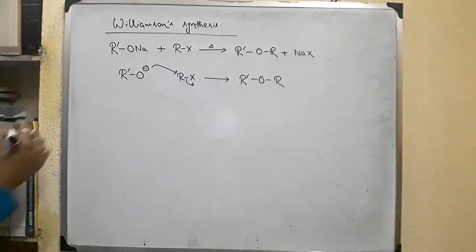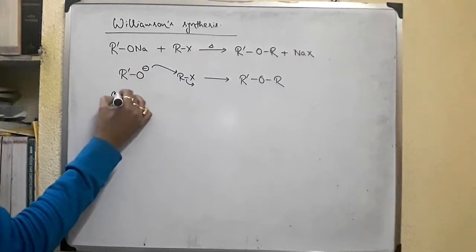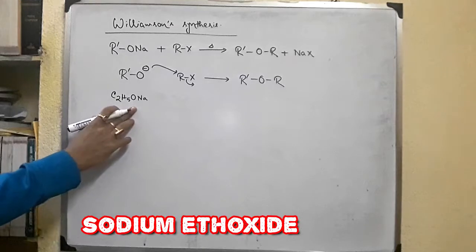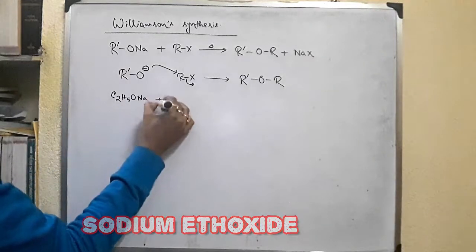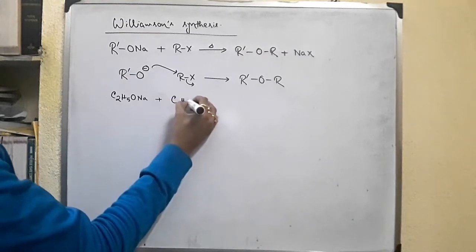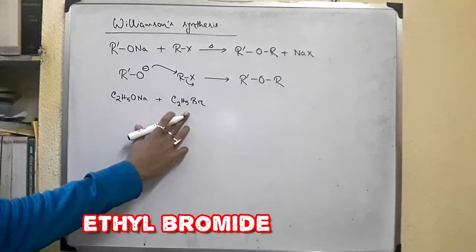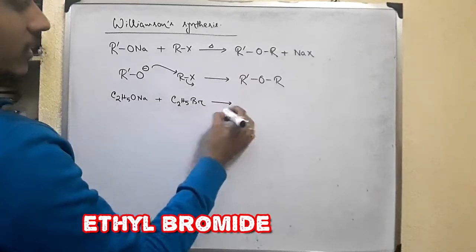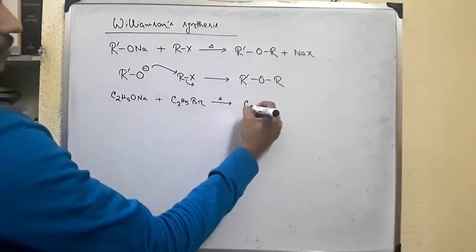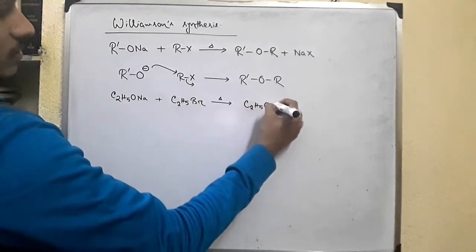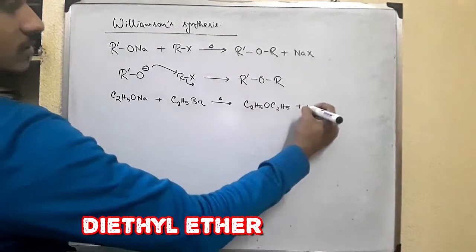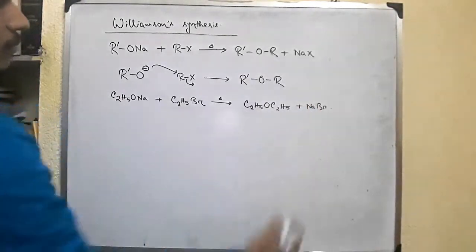For example, taking C2H5ONa — sodium ethoxide — plus C2H5Br — ethyl bromide — when they react we get a symmetrical ether, that is diethyl ether, plus the byproduct sodium bromide.